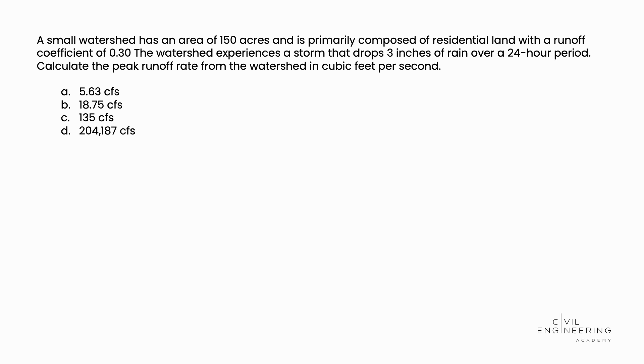A small watershed has an area of 150 acres and is primarily composed of residential land with a runoff coefficient of 0.30. The watershed experiences a storm that drops 3 inches of rain over a 24-hour period. Calculate the peak runoff rate from the watershed in cubic feet per second.